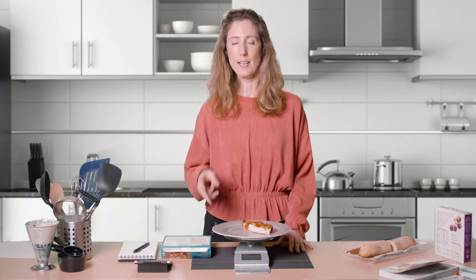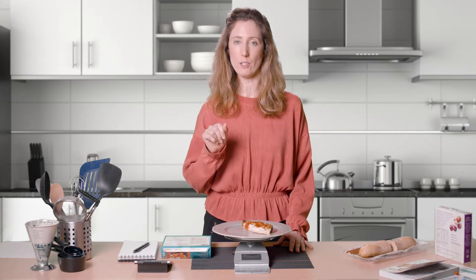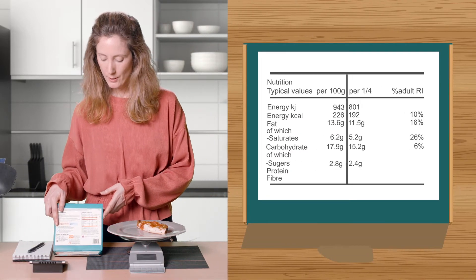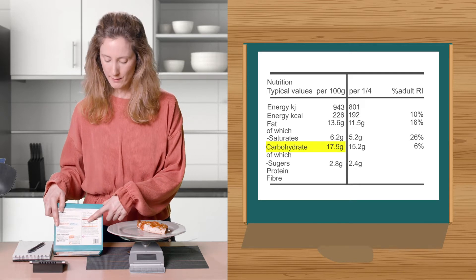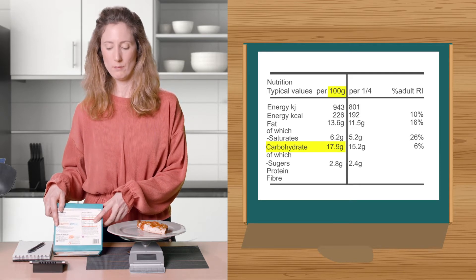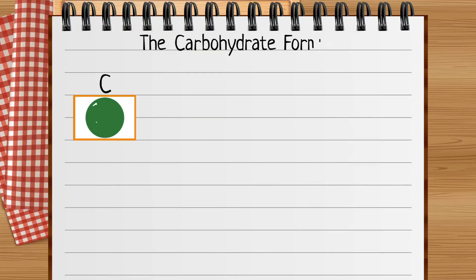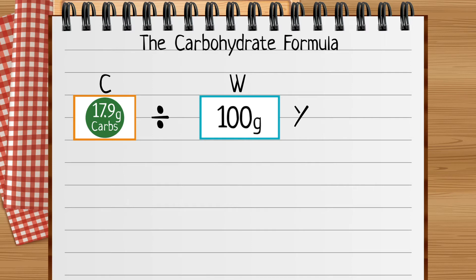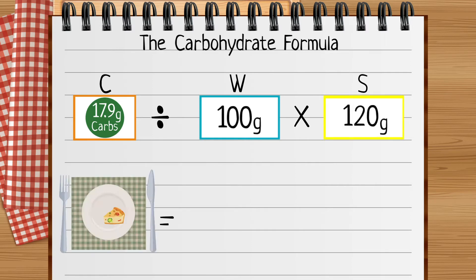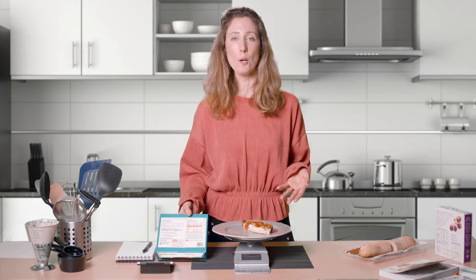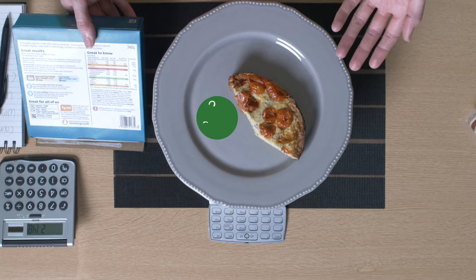To do the calculation I need two more pieces of information — I'm going to use the food label. I need the carbohydrate and the weight. The calculation is C divided by W, multiplied by S, which gives me the carbohydrate in my serving of food. From the calculation, the carbohydrate in my quiche is 22 grams.